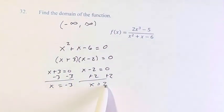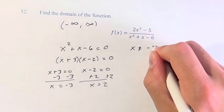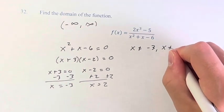And these are the two values out of all real numbers that we cannot have for this function. So therefore, the domain is that x is not equal to negative 3, and x is not equal to 2.